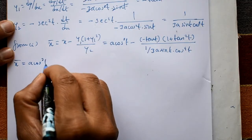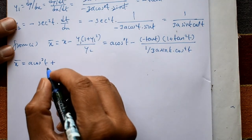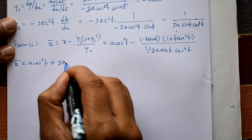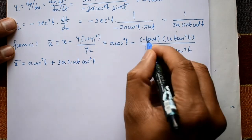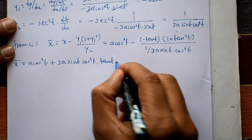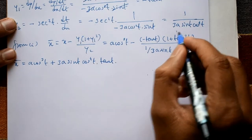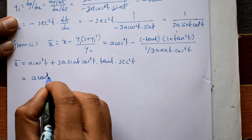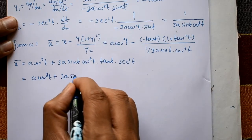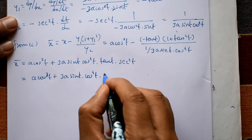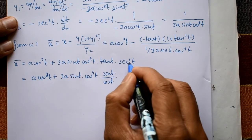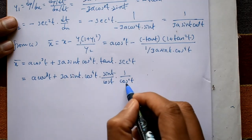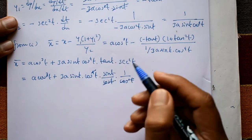Expanding x̄: first term is a·cos³(t). Shifting the denominator up, we get +3a·sin(t)·cos⁴(t)·tan(t)·(1 + tan²(t)). Using the identity 1 + tan²(t) = sec²(t) = 1/cos²(t), and tan(t) = sin(t)/cos(t), the cos terms combine to cos³(t), which cancels.